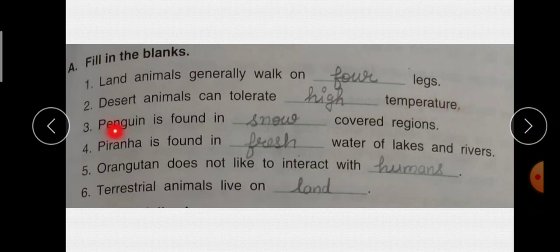Third है penguin is found in dash covered reasons. कि penguin जो है कौन से reason में रहता है? ठीक है तो it is found in snow covered reasons. Answer है बेटा snow. Fourth है firana is found in dash water of lakes and rivers. कि firana जो है कैसे पानी में रहती है? Fresh water of lakes and rivers.